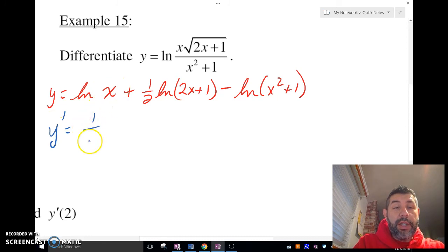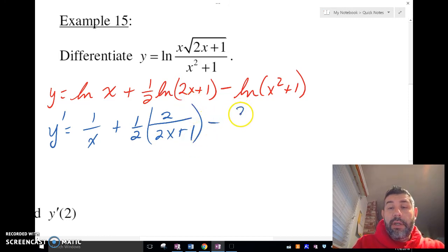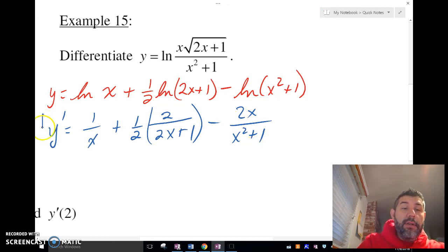ln of x is 1 over x. We got one-half times the derivative of the inside over the inside, minus the derivative of the inside over the inside, and we got it. That's it. There's our derivative.